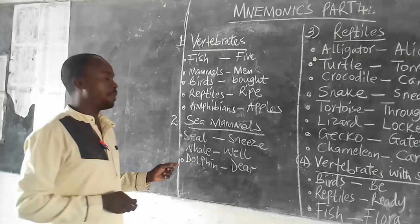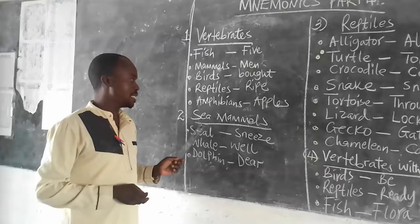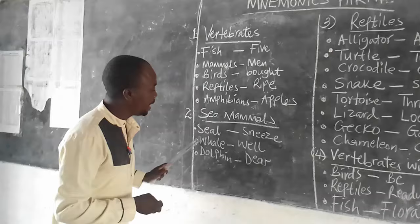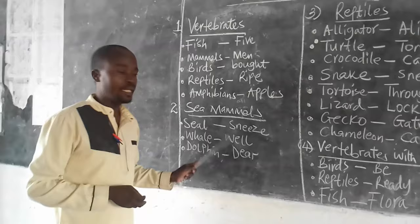Number two, sea mammals. Sea mammals are mammals which live in the water. They include seal, whale, dolphin. Mnemonic: sneeze, whale, beer.